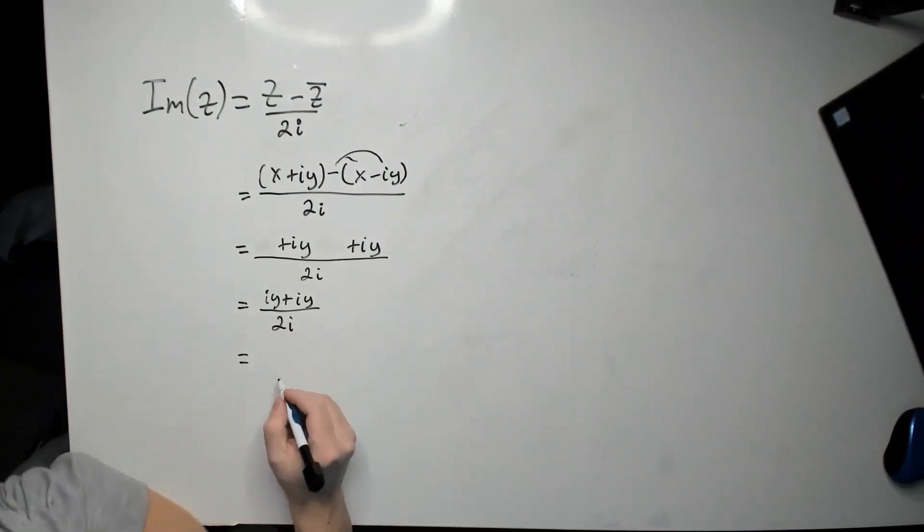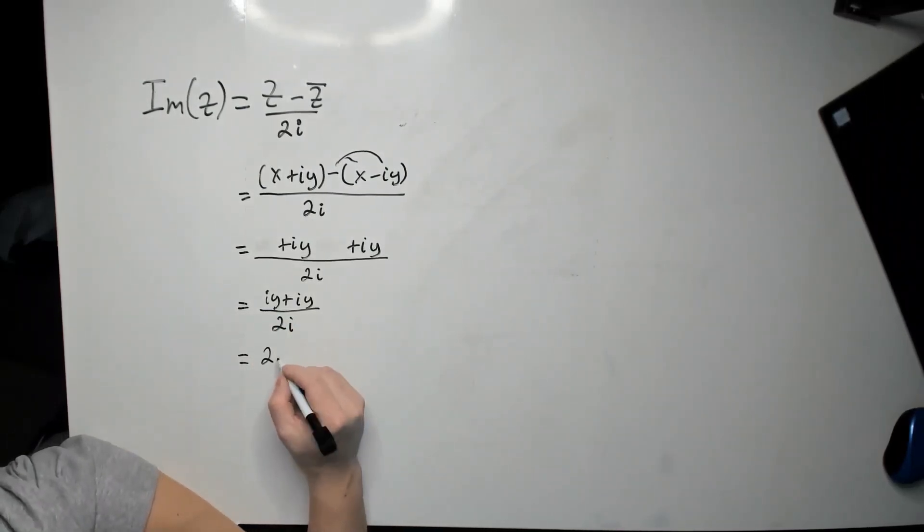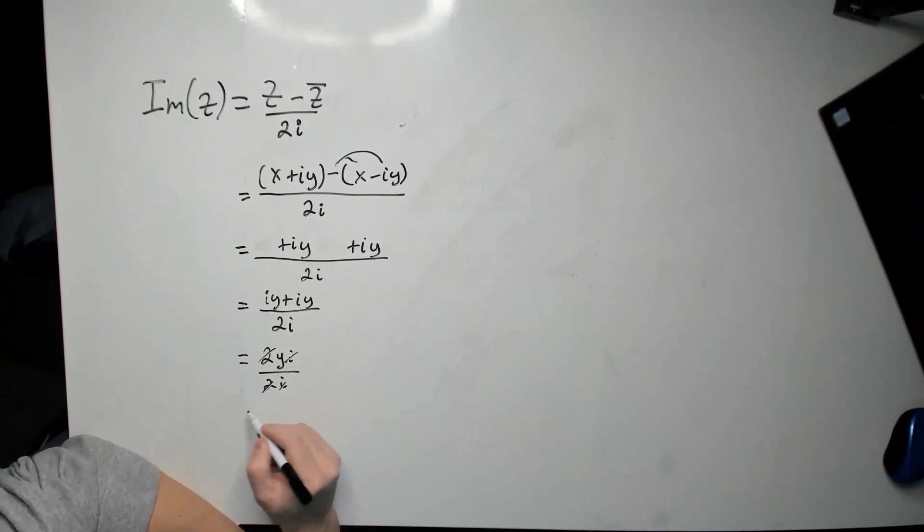Continue. So now this is going to give you 2yi over 2i. And now I hope you see why you need to have a denominator the entire time 2i, because now this has to cancel with this, this cancels with that, and it leaves y, and this is the imaginary part of the number z.